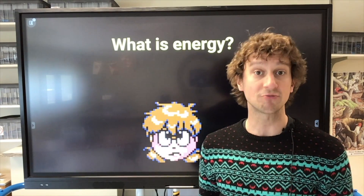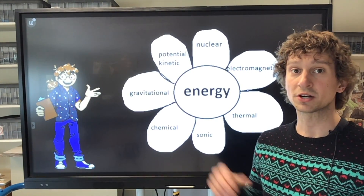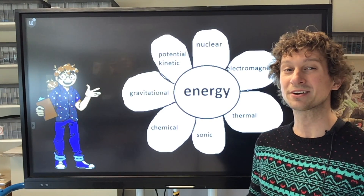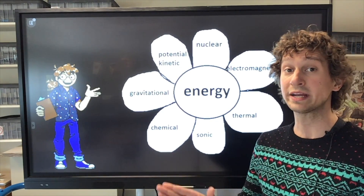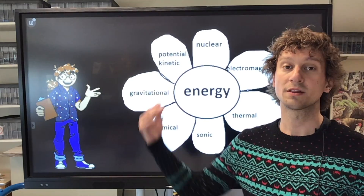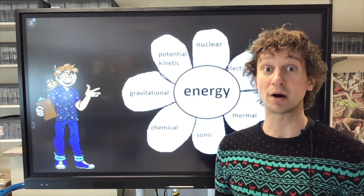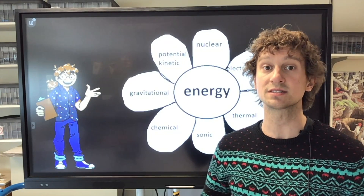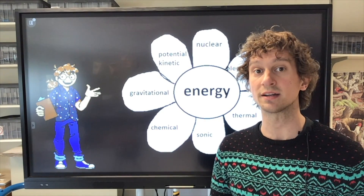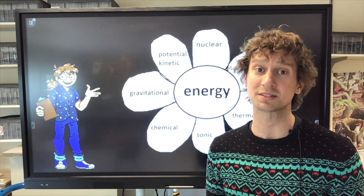Energy comes in different forms, and we discussed this last class — the eight types of energy. There's potential and kinetic, gravitational, chemical, sonic or sound energy, thermal which is heat energy, and electromagnetic, which describes a whole range from electrical to magnetic to the visible light spectrum. The final energy form is nuclear. When we talk about nuclear, we're not just talking about nuclear power plants or bombs — we're talking about the energy inside the nucleus of everything. We are all made up of atoms which have a nucleus inside, so nuclear energy refers to the energy of atoms and molecules, the smallest things that make us up.